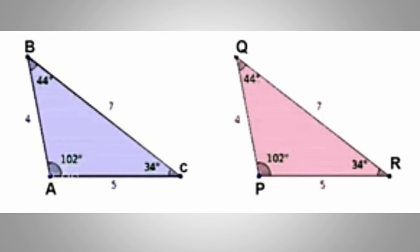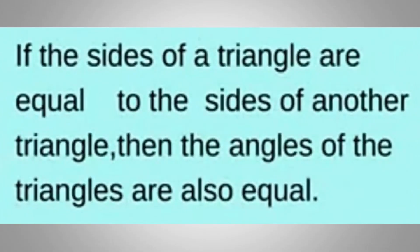Let's take an example with triangles. Here are three different triangles. The right angles can be equal. In triangle ABC, A and C are 5 cm, and in triangle PQR, the corresponding sides are also 5 cm. The angles CBA and RQP are both 44 degrees. So we have a general principle: if the sides of a triangle are equal to the sides of another triangle, then the angles of the triangles are also equal.